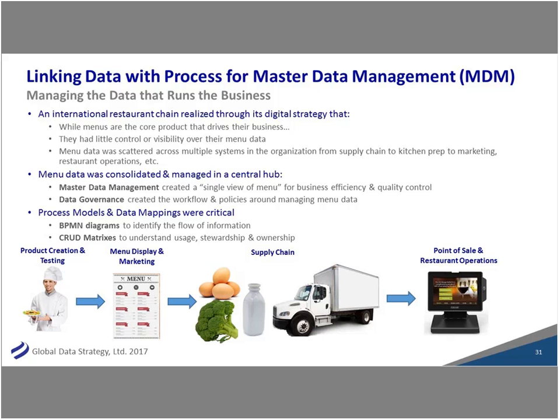The restaurant chain didn't really have a single source of truth for their menus. One comment was: 'I think the printer has better master data than we do because they printed all the menus.' Menu data was scattered across different systems — supply chain, kitchen preparation, marketing, restaurant operations. They started the MDM program to get a single view of their assets, but as soon as they started, they realized they needed to start with process. We built detailed process models, literally going into the kitchens and talking to chefs — doing high-level data and process modeling with people who went to culinary school, not data school.